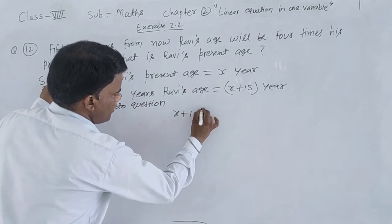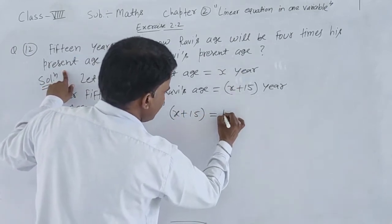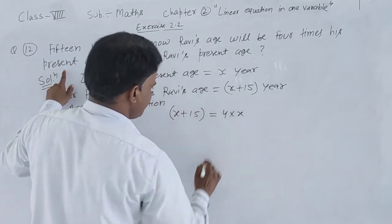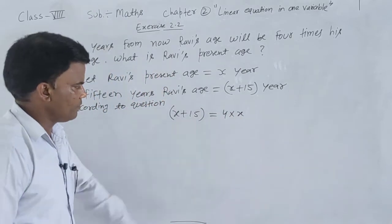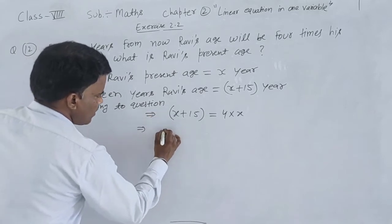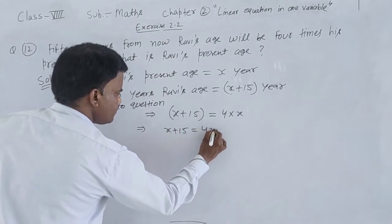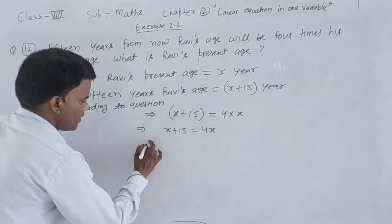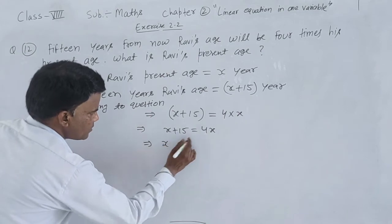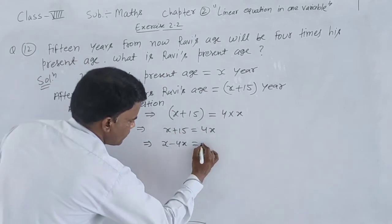15 years back, x plus 15. Present age 4 times, it means 4 multiplied by x. This equation is according to the question. It implies that x plus 15 equal to 4x.